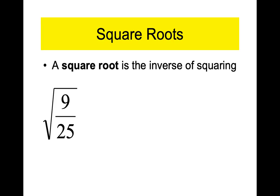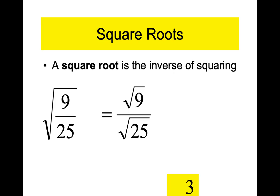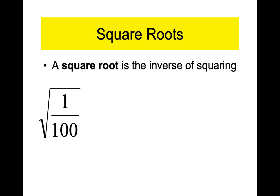Second eighth-grade square root problem: what fraction multiplied by itself is this? Here's what you do — if you have the square root of a fraction, you take the square root of the top and the bottom separately. The square root of nine is three, the square root of 25 is five, so the square root of nine twenty-fifths is three-fifths. Similarly, the square root of one is one and the square root of 100 is ten, so the square root of one one-hundredth is one-tenth.